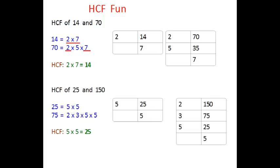Now when you look at these two examples, do we see some similarity? Yes, the similarity is this: 70 comes in 14 table, 14 fives are 70, and 150 comes in 25 table, 25 sixes are 150.